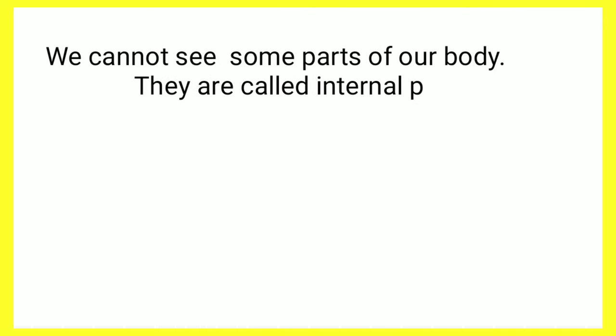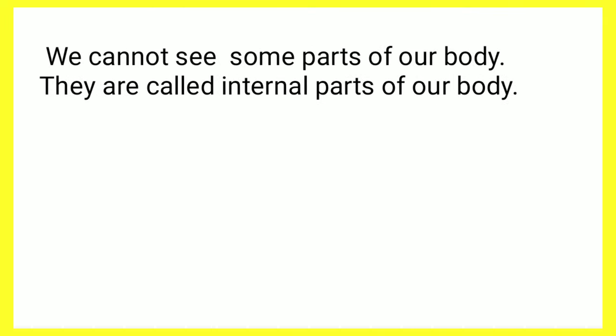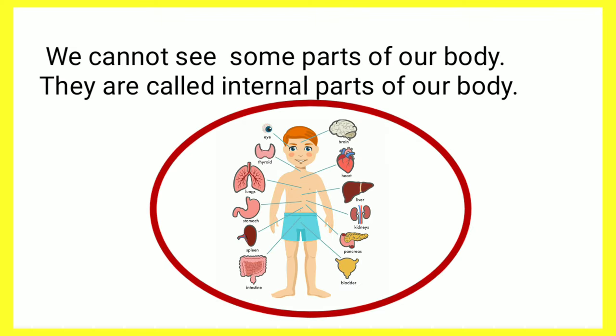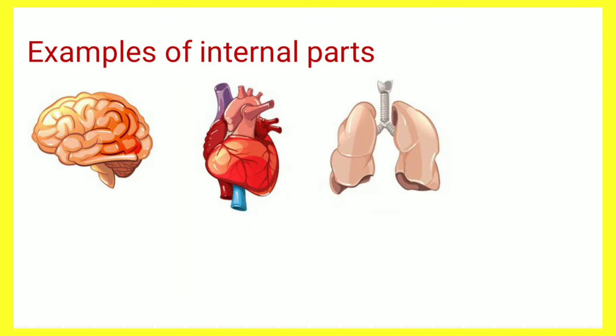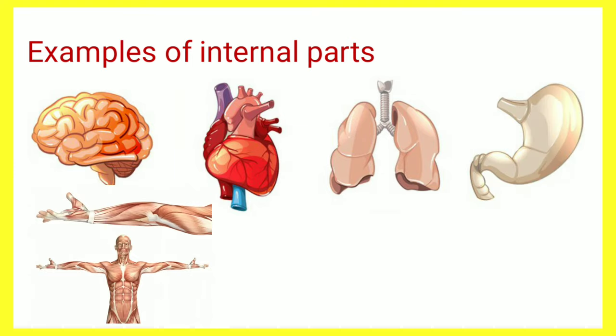We cannot see some parts of our body. They are called internal parts of our body. It works all the time without rest. For example, brain, heart, lungs, stomach, muscles and bones.